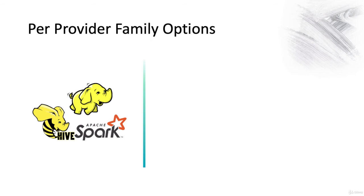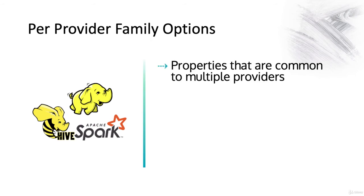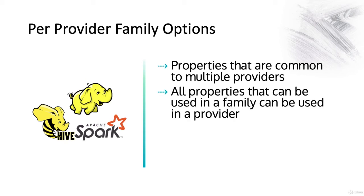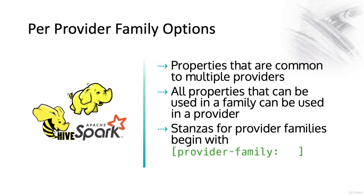Then we have per provider family options. These are things that are common to a whole family of products like Hadoop, Hive, Spark, and things like that. All properties that can be used in a family can be used in a provider. If the same property is specified in a provider family and in a provider belonging to that family, the family value takes precedent. Stanzas for provider families begin with 'provider-family:', then the provider family name.